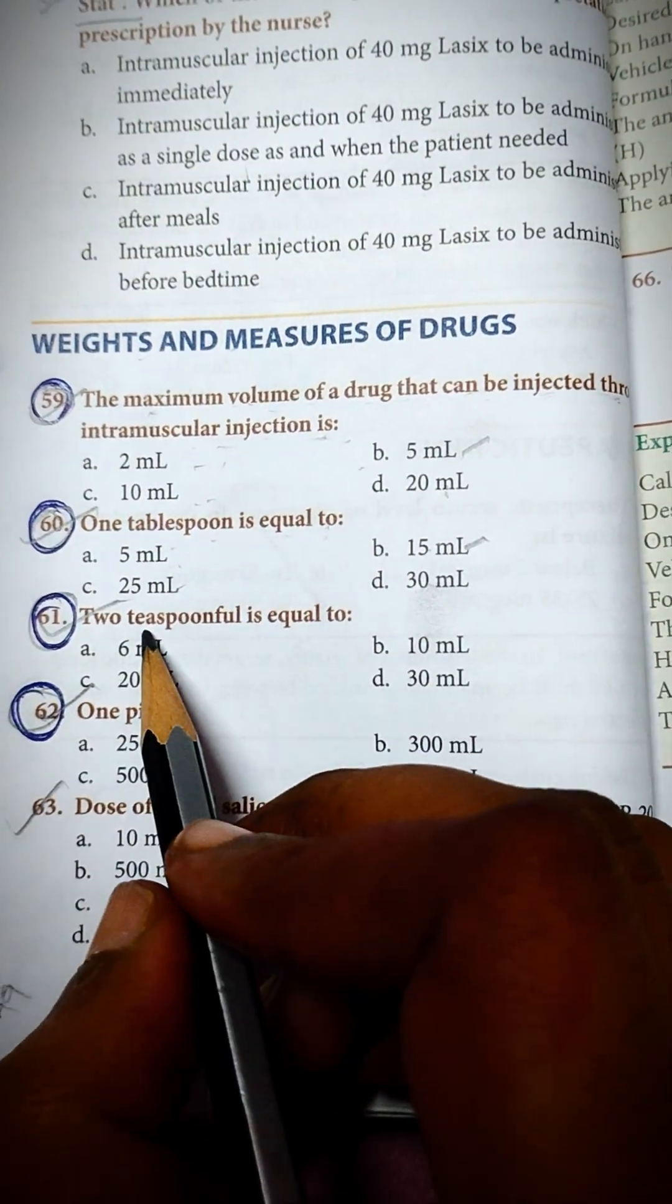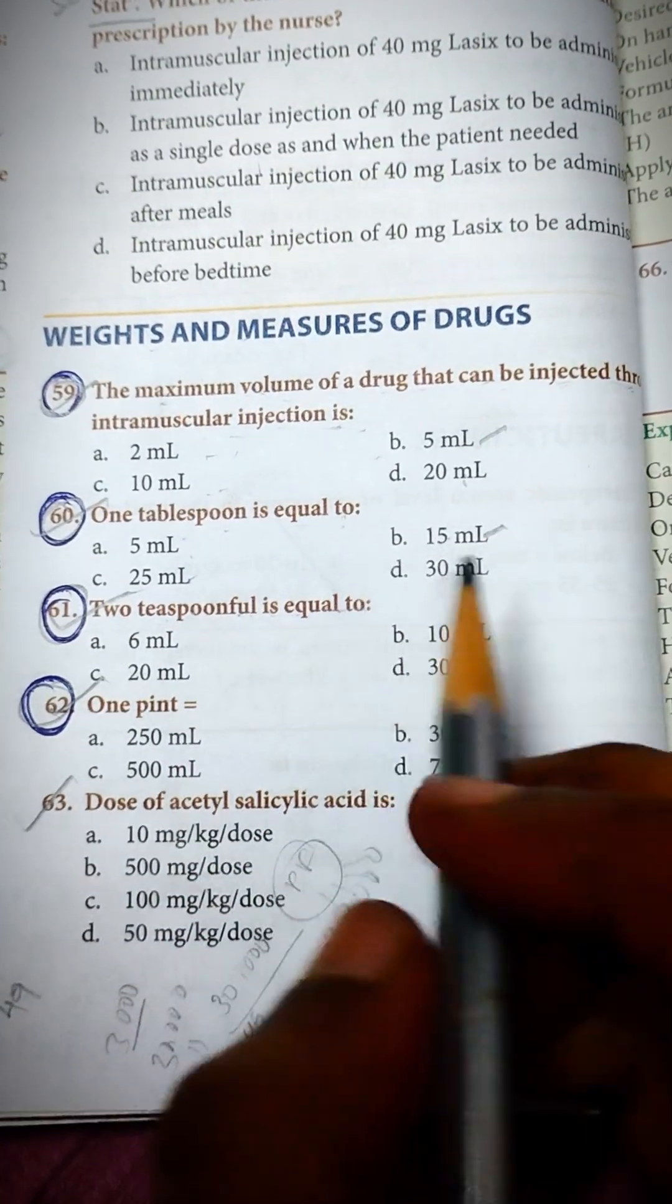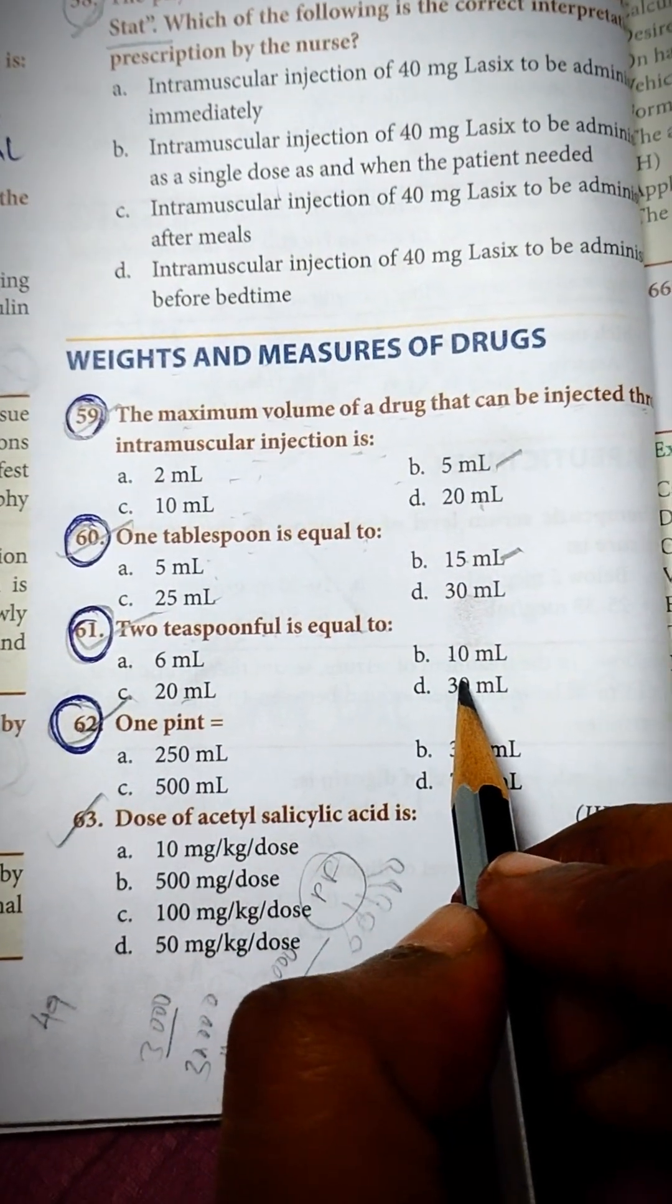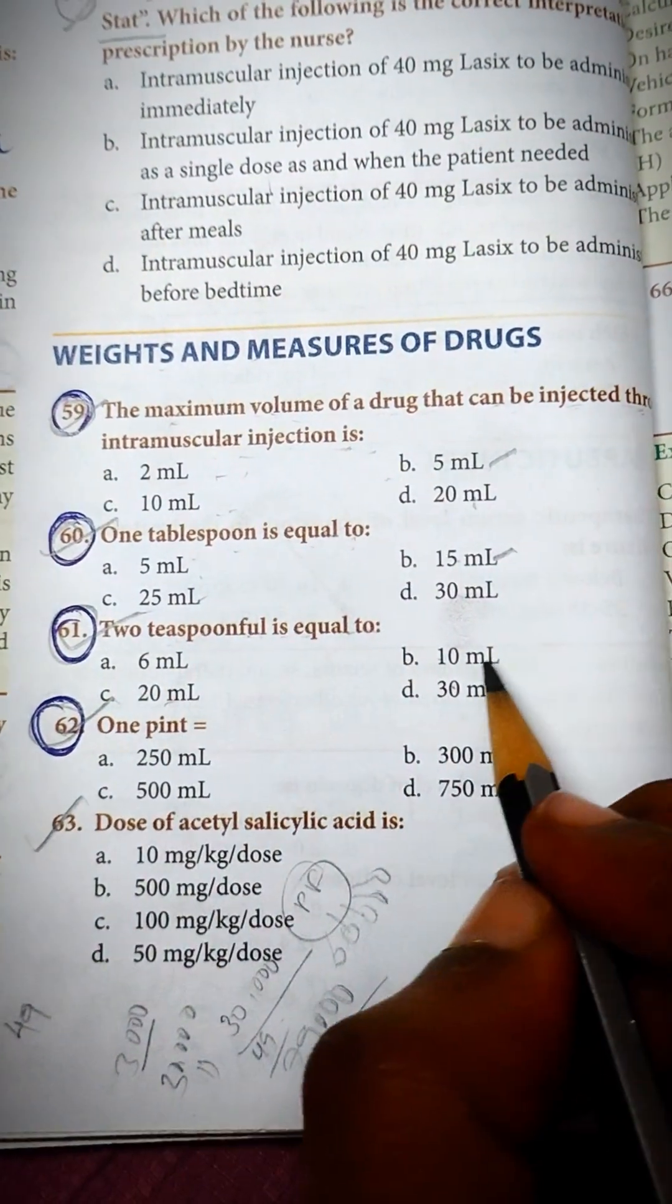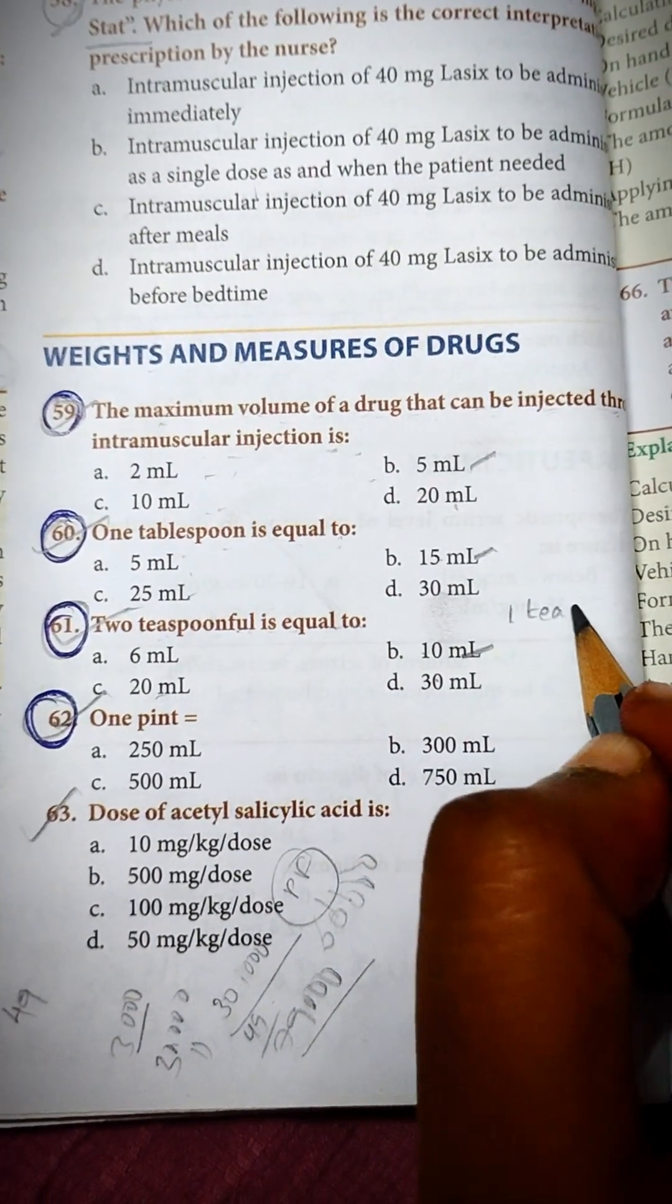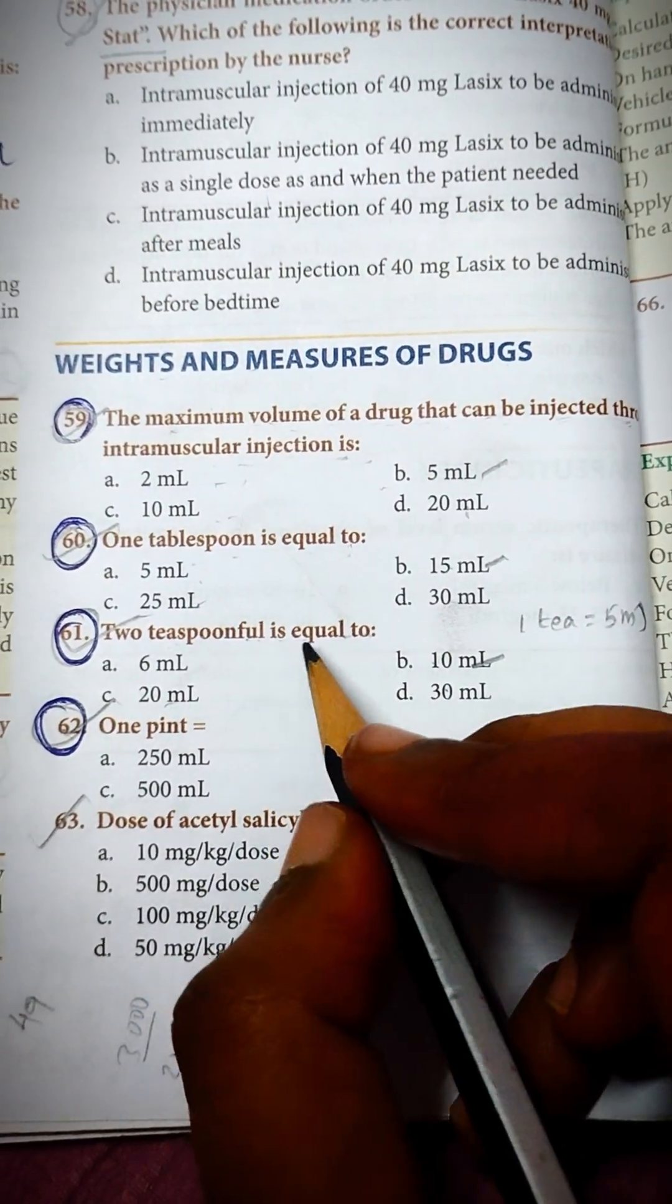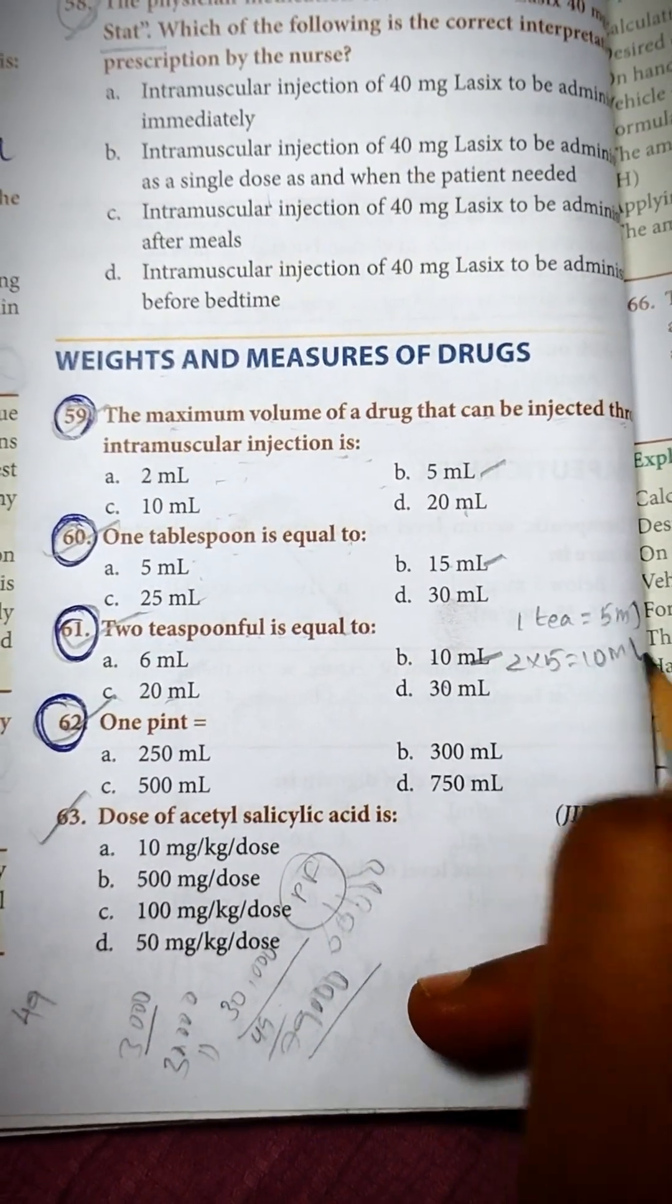Then, 2 teaspoons is equal to: a) 6 ml, b) 10 ml, c) 20 ml, d) 30 ml. The answer is b, 10 ml. One teaspoon equals 5 ml, and here they asked 2, so 2 teaspoons is equal to 2 into 5, 10 ml.